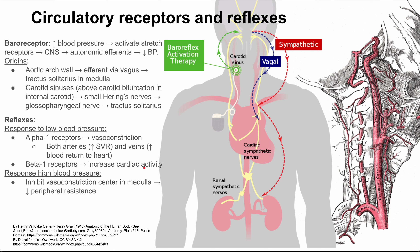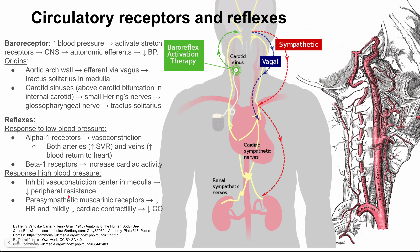In response to high blood pressure, you're going to inhibit vasoconstriction — the opposite of what we saw for low blood pressure, which makes sense because you have the opposite problem. You want to inhibit the vasoconstriction center in the medulla, which will decrease peripheral resistance and decrease systemic vascular resistance. You can also have activation of parasympathetic muscarinic receptors, which directly decrease heart rate and mildly decrease cardiac contractility — the opposite of beta-1 receptors — thereby decreasing cardiac output. That covers the baroreceptors.